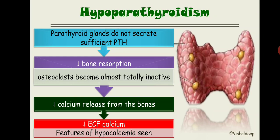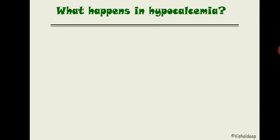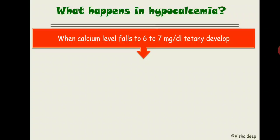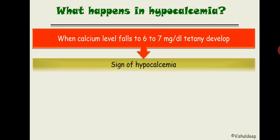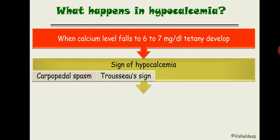In hypocalcemia, when calcium falls to 6–7 mg/dL, tetany develops. The signs of hypocalcemia can be remembered with the mnemonic CTC: the first C is carpopedal spasm, T is Trousseau's sign, C is Chvostek's sign, and the last feature is prolonged QT interval seen on ECG.